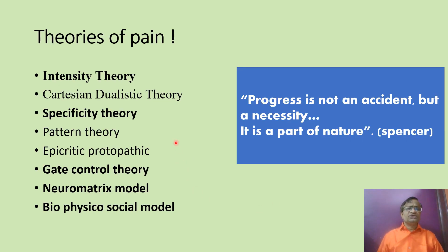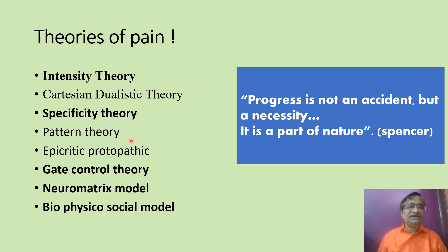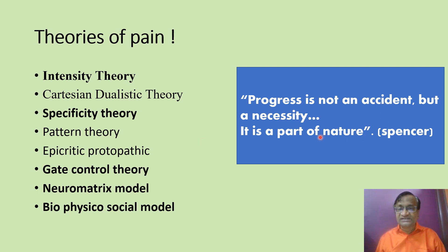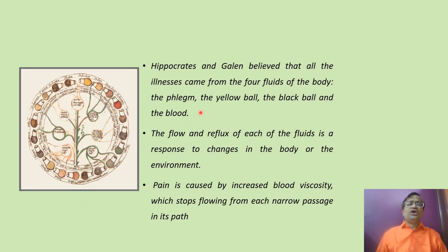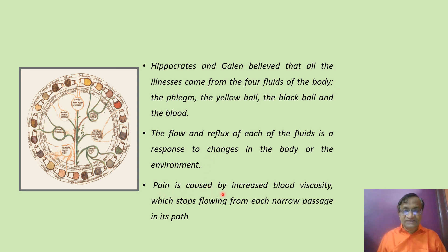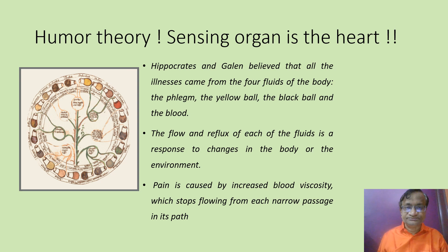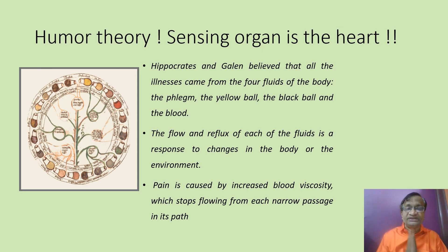There are so many theories — intensity theory, Cartesian dualistic theory, specificity theory — and we will go through them one by one in simple terms. The Hippocrates and Galen believed that all illness came from four humors of the body. They said pain is caused by blood viscosity, and the heart is the sensing organ. Pain is caused by an increase in blood viscosity — that is what is known as the humor theory of Hippocrates and Galen.